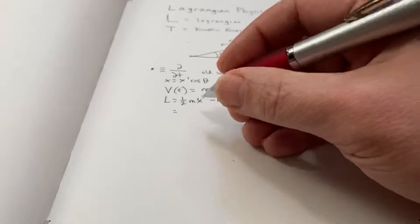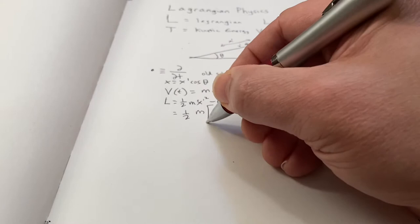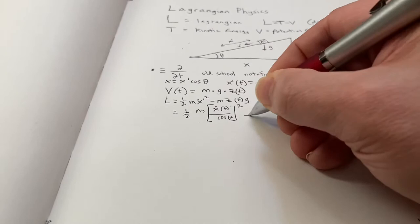There's also something called the Hamiltonian, which is the potential plus kinetic instead of the difference between the two. And there's something called the Hamiltonian formalism that goes along with that, but we won't use that. We're going to use the Lagrangian formalism here.